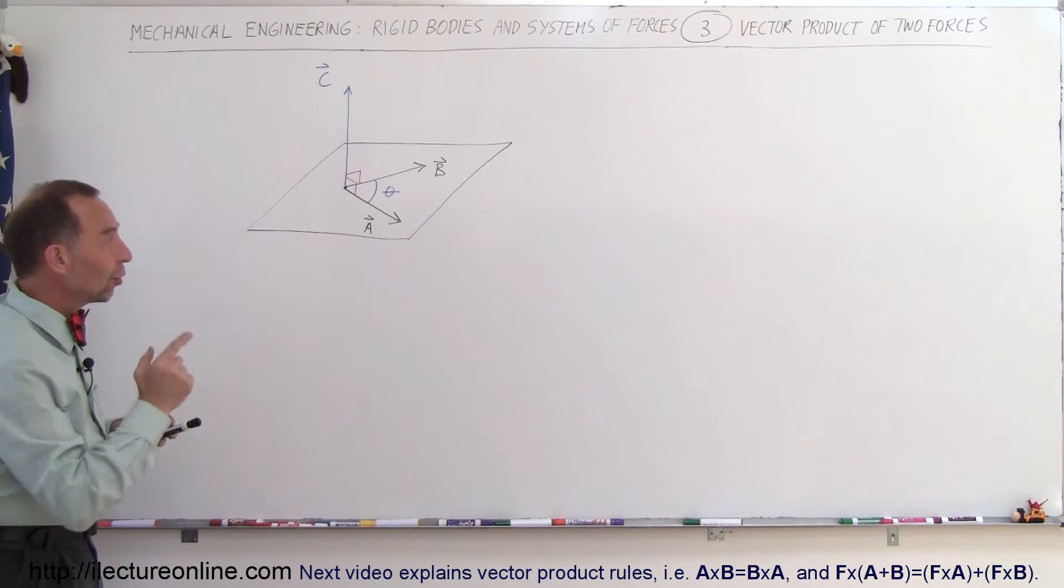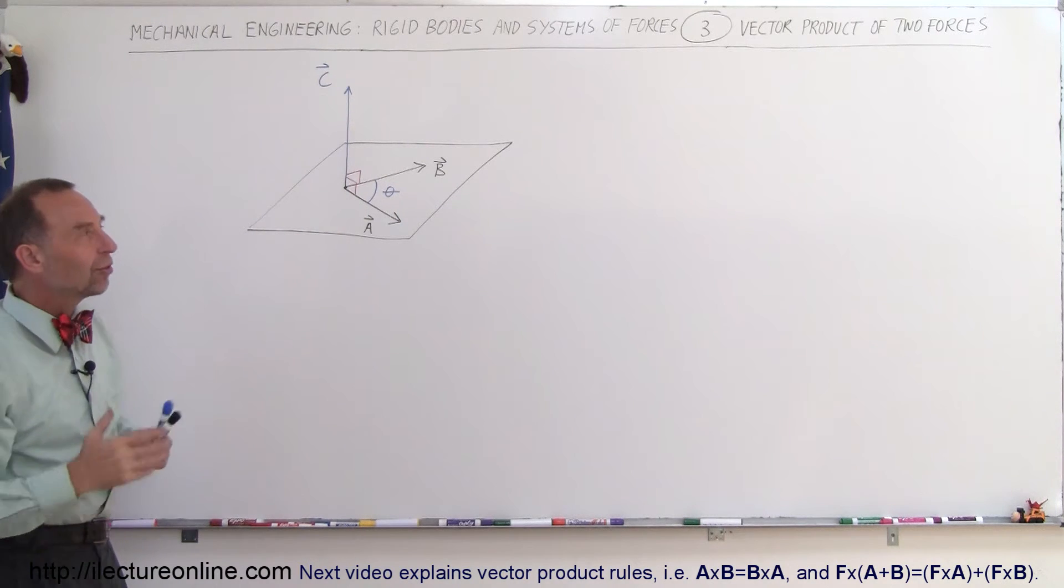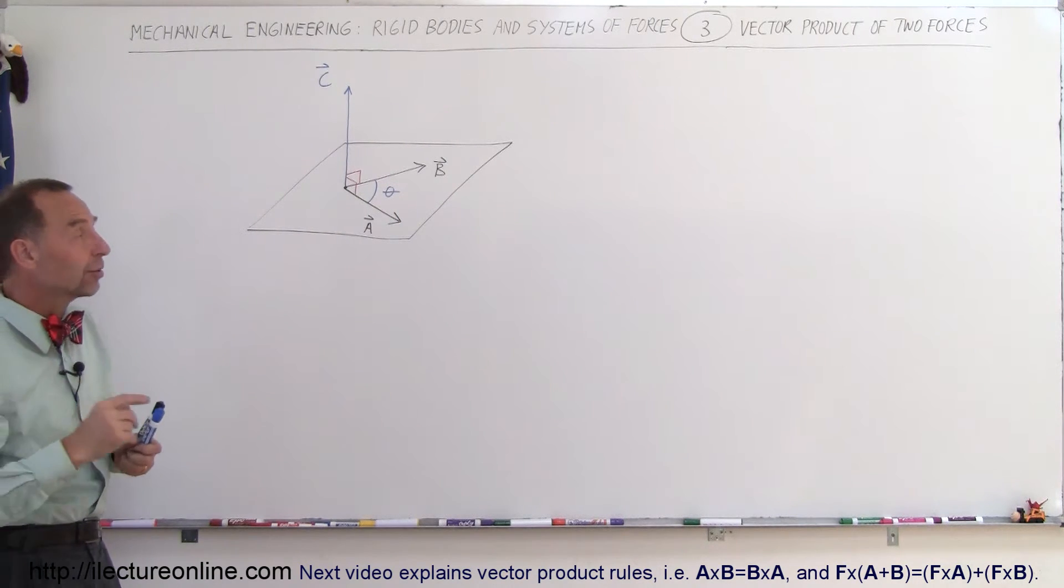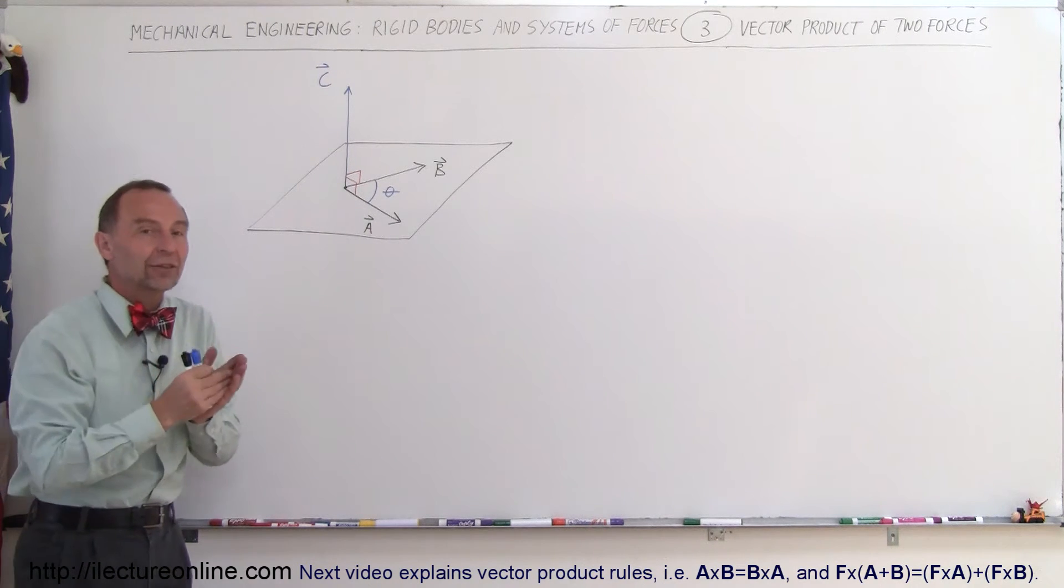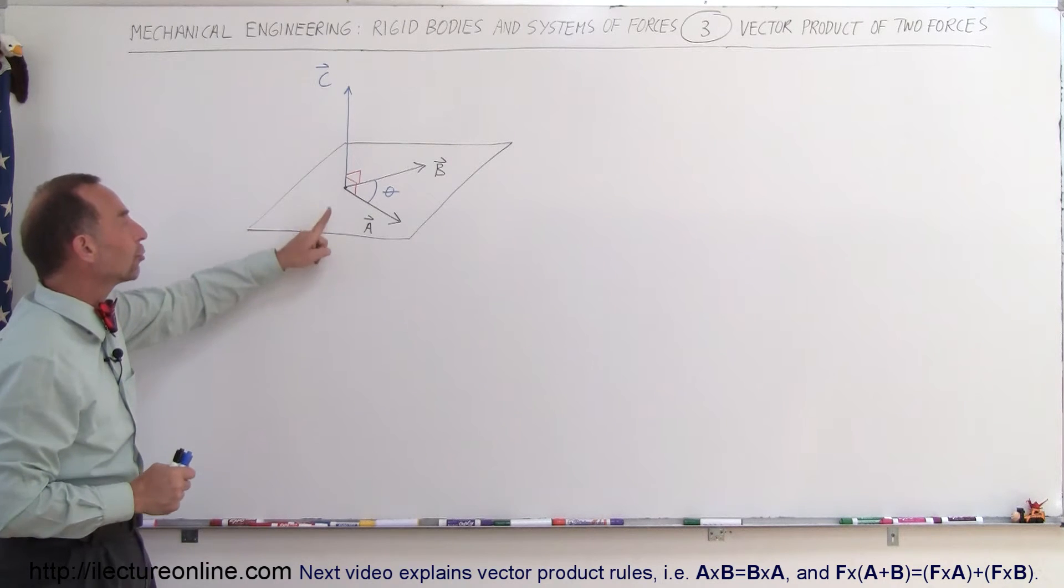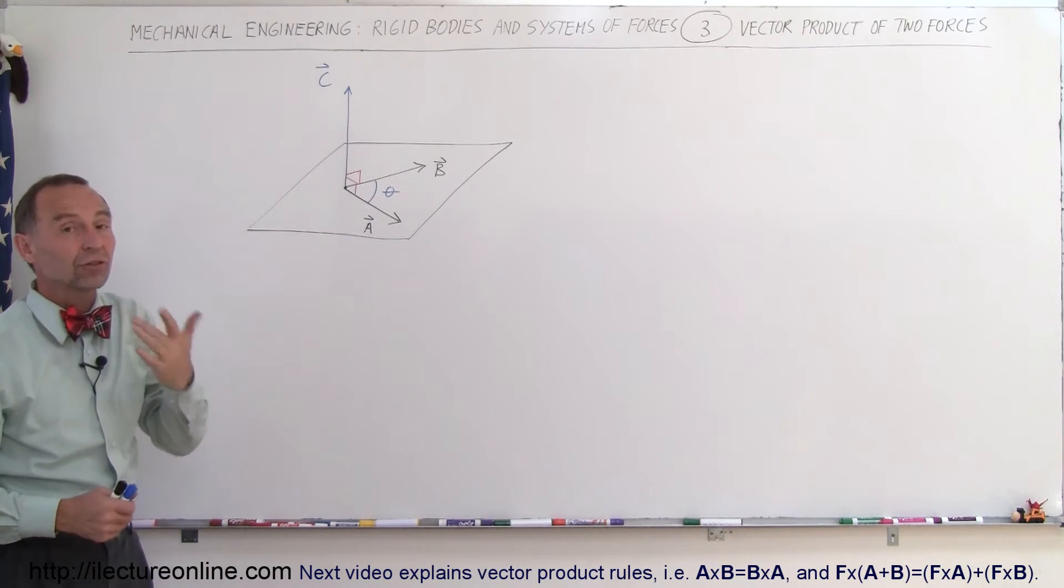Now there's always an angle between the two vectors, let's call the angle theta. Now what is the vector product? Well the vector product of A and B are such that the result of that vector product will be another vector and that vector will be perpendicular to both vector A and vector B. Let's call that vector vector C.